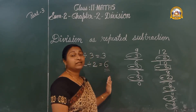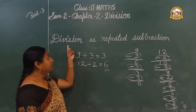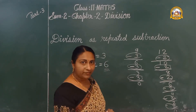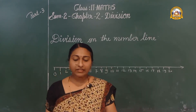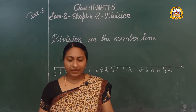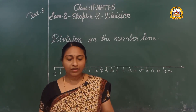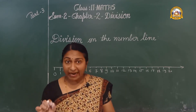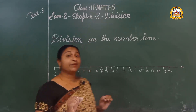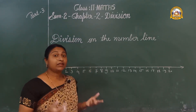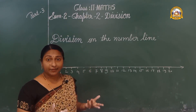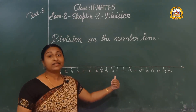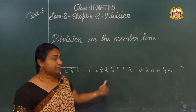Division as repeated subtraction — did you get it? Okay children, next: division on the number line. How many times can 3 be subtracted from 9? With the help of a number line, let us understand that.